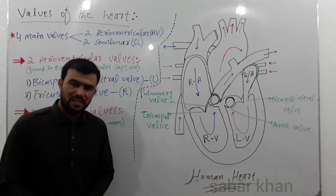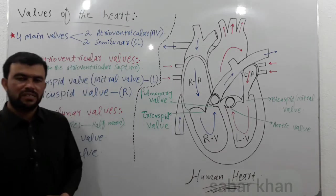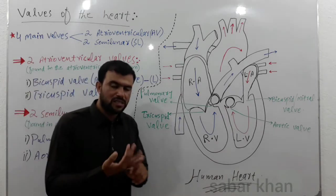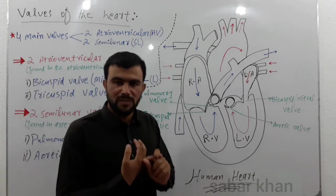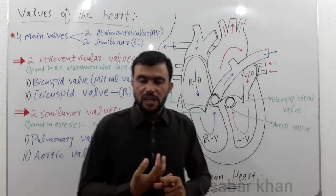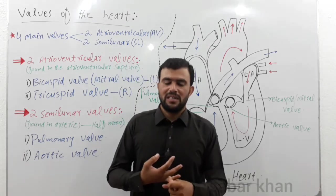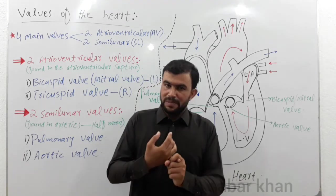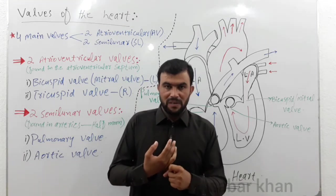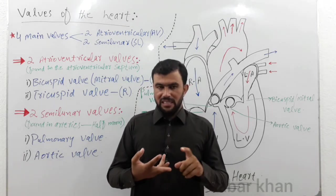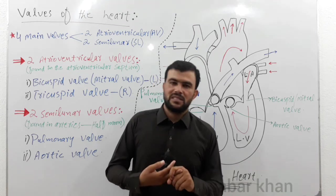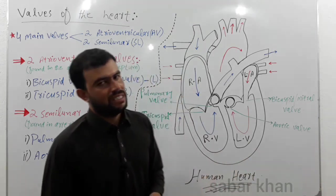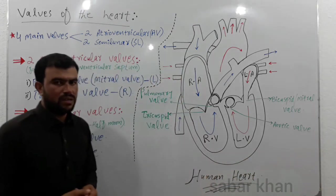So there are four main walls in the human heart: two are the atrioventricular walls and two are the semilunar walls. The atrioventricular walls are the bicuspid and tricuspid valves, and the semilunar walls are the pulmonary valve and aortic valve.